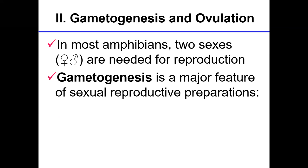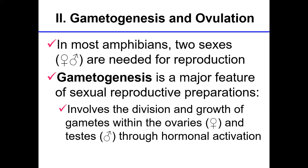Let's focus on gametogenesis and ovulation. In most amphibians, two sexes are needed for sexual reproduction, although there are some remarkable exceptions such as asexual reproduction, which we'll talk about later. Each sex must be reproductively ready — they must be mature and at the right time of year to reproduce. This timing has internal controls but is ultimately coordinated by the environment; changes in temperature or photoperiod may help spark the beginning of a reproductive cycle. Gametogenesis is a major feature of sexual reproduction preparation and involves the division and growth of gametes within the ovaries and testes through hormonal activation.